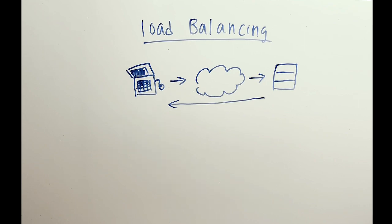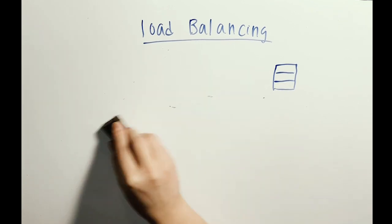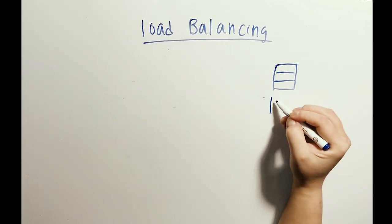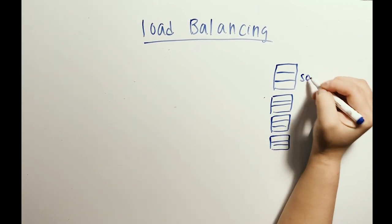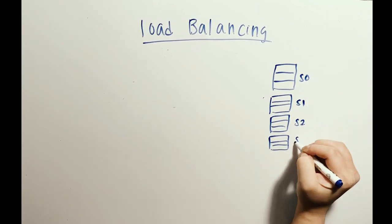When a company has multiple servers, we need to solve the problem of how to equally distribute the number of requests that come into each server. Let's say you have four servers. You want 25% of the requests to go to each server. So how can you equally balance the load?